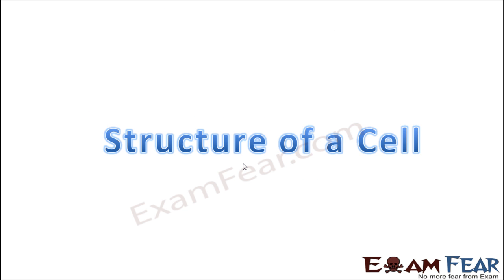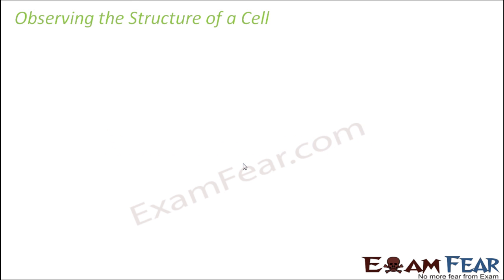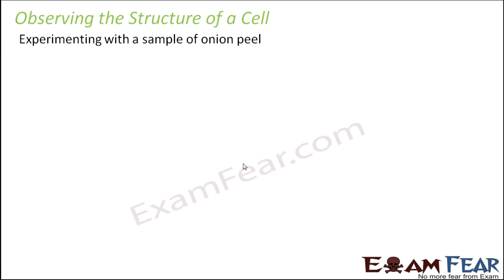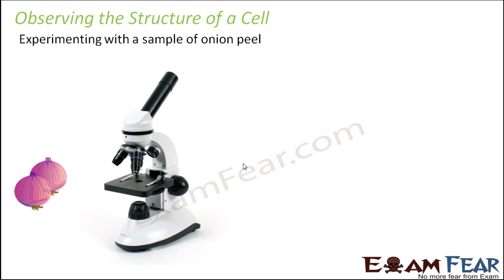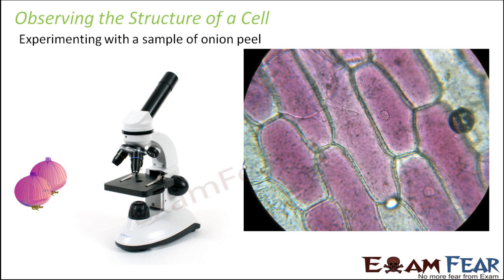Let us now study the structure of a cell. The first time you try to observe the structure of a cell, you can do that with the help of a microscope. You can experiment with a sample of onion peel — just take a thin slice of onion and try to observe it under the microscope.